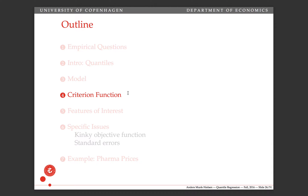In some sense, if you trust me, I could just give you that criterion function and say: if you minimize this one, you will get the true parameters for both of the two models we've looked at — both the heteroskedasticity model and the heterogeneous parameter model. For both of them, minimizing that criterion function will give you the right betas.